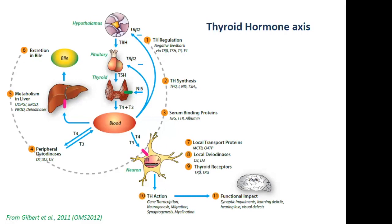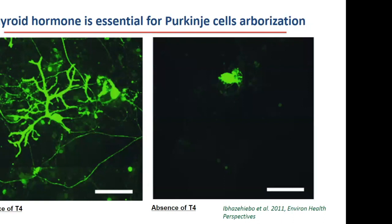Thyroid hormones reach organs like the brain. They enter cells not via passive diffusion as was previously thought, but since 2004 we know that specific membrane transporters are expressed — for example MCT8 and OATP. Thyroid hormones encompass multiple processes during brain maturation, including gene transcription, neurogenesis, migration, synaptogenesis, and myelination. If one of these processes is disrupted by a chemical, that could have functional impacts like learning deficits, hearing loss, or visual defects.